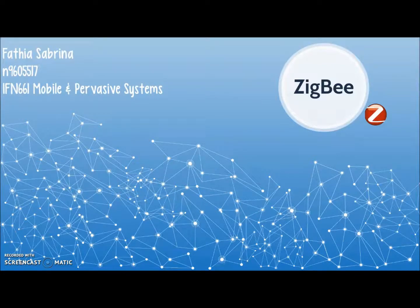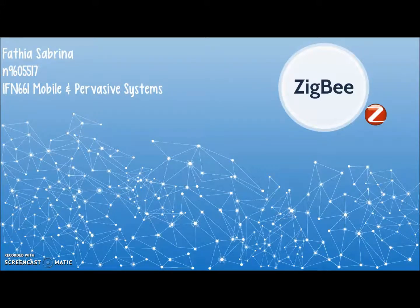These smart devices usually connect through a communication system regulated by a communication protocol. In this video, I would like to talk about one of the wireless communication protocols commonly used in smart home or IoT devices — Zigbee.